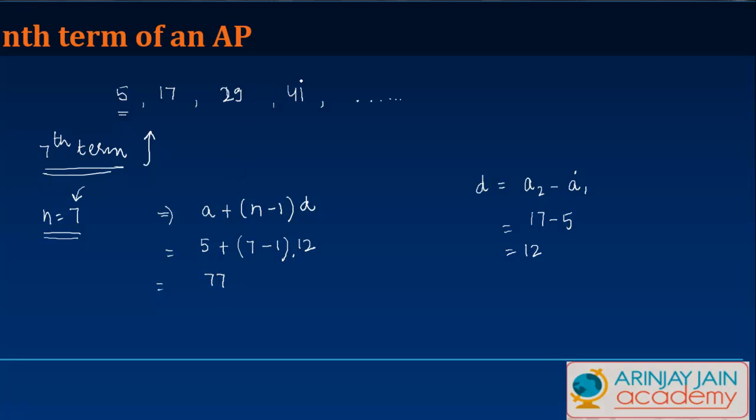Now we know the difference is 12. So after 41, we will have 53. Then we have 65 because we add 12 here. Again, we add 12, we get 77.